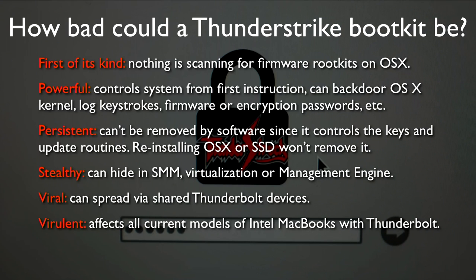To sum up, how bad could an actual weaponized version of Thunderstrike be? There's nothing looking for firmware rootkits on OS X right now. It's in control of the system from the very first instruction. It can backdoor the kernel, log keystrokes, exfiltrate data. It can't be removed by software since it controls the RSA keys and the update routines. You can reinstall OS X and it will still be there. You can swap out your SSD and it will still be there. You can swap out your laptop and your Thunderbolt device might reinfect your new one. It can also hide in things like SMM, virtualization, or maybe even the management engine. It can spread virally via shared devices and affects all current models of Intel MacBooks with Thunderbolt.